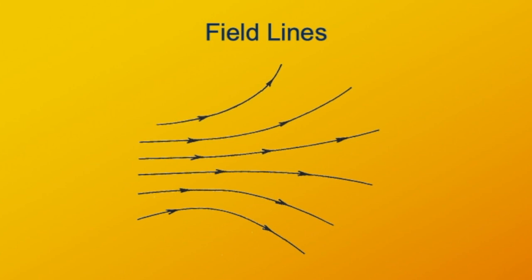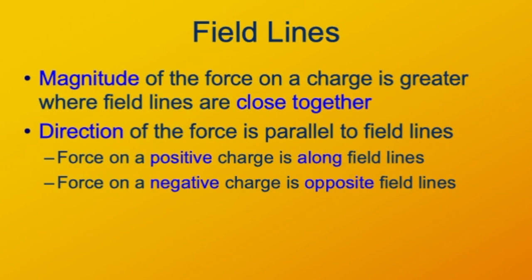This is the same electric field visualized as field lines. It looks like we're missing some information because we don't have an idea of the magnitudes of the field at all these different points — but it's showing us better what the direction is. It turns out there's a simple trick we can use to visualize the strength of the field as well as the direction entirely from these field lines. The magnitude of the electric field — the magnitude of the force on a test charge — is greater where the field lines are closer together.